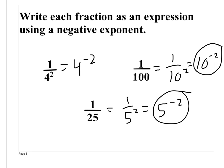It won't always be to the second power. What if I give you 1 over 8? Could I do 4 squared? No, because 4 squared is 16. So I have to use 2 to the third power: 2 times 2 is 4, and 4 times 2 is 8. Make sure you're not just thinking it has to be squared — it doesn't always have to be. So for 1 over 8, the answer is 2 to the negative 3 power.